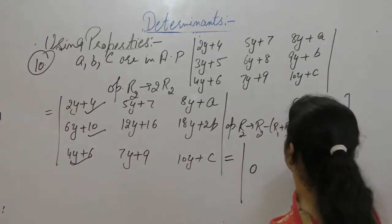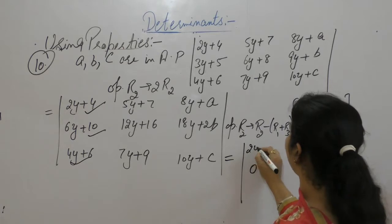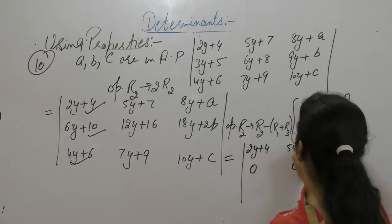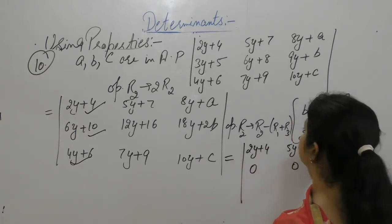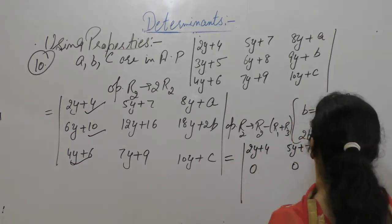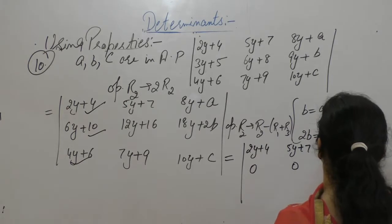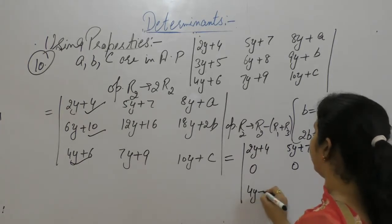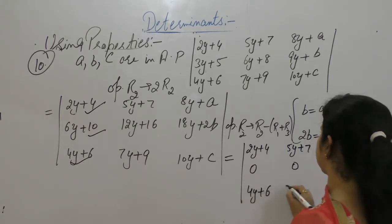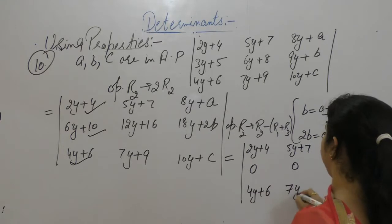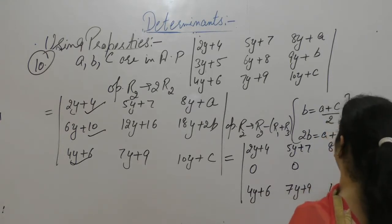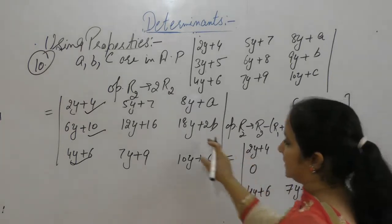The new R2 row entries are: 0, 0, then 2Y plus 4, 5Y plus 7, 8Y plus A, 4Y plus 6, 7Y plus 9, and 10Y plus C. Now for this second element: